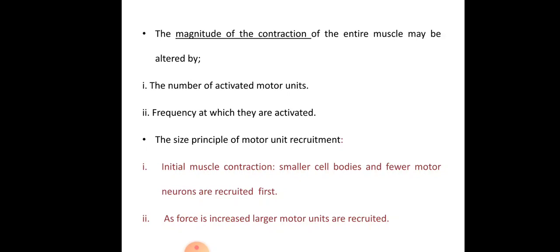Remember the size principle of motor unit recruitment: during initial motor contraction, smaller cell bodies with fewer motor neurons are recruited first. As force increases, larger motor units are recruited. The size of a motor unit relates to the number of muscle fibers and the size of the motor nerve axon.